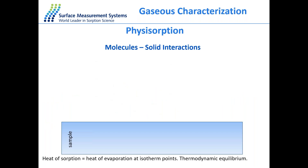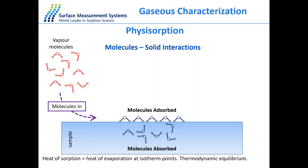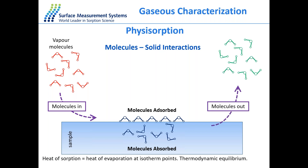We now move to the main part of the talk: gaseous characterization. Gaseous characterization refers to vapor/gas phase characterization, described by the physisorption process. In a typical physisorption process, a vapor or gas molecule reacts with the solid surface of a material, forming an adsorbed layer; some molecules may diffuse into the bulk of the solid. As pressure increases, more molecules get adsorbed. This is a thermodynamic equilibrium where heat of adsorption equals heat of evaporation at each isotherm point.